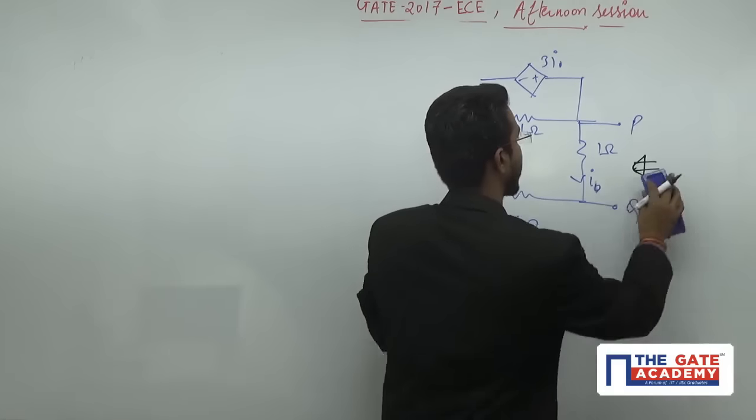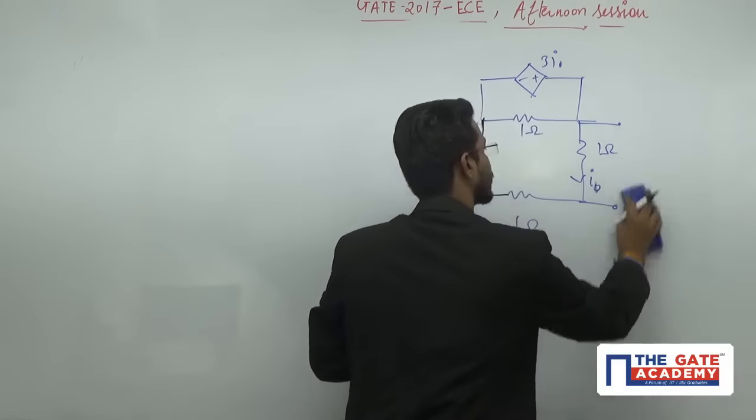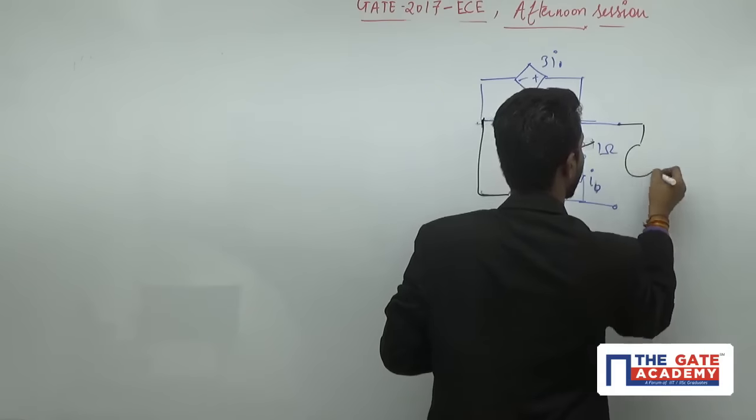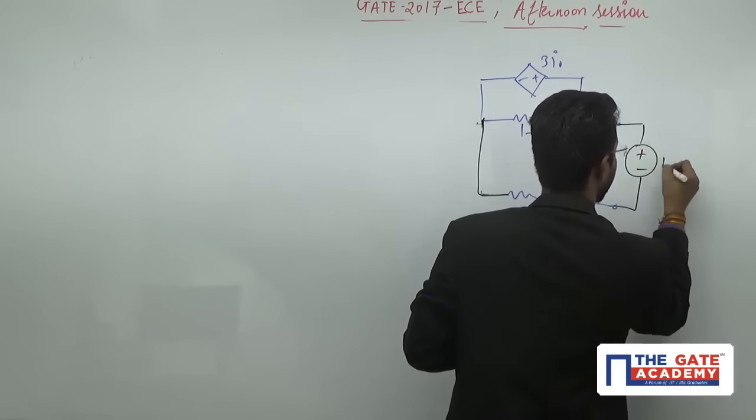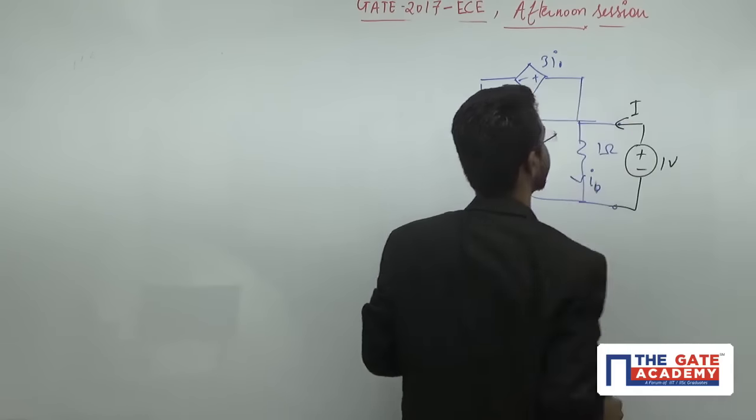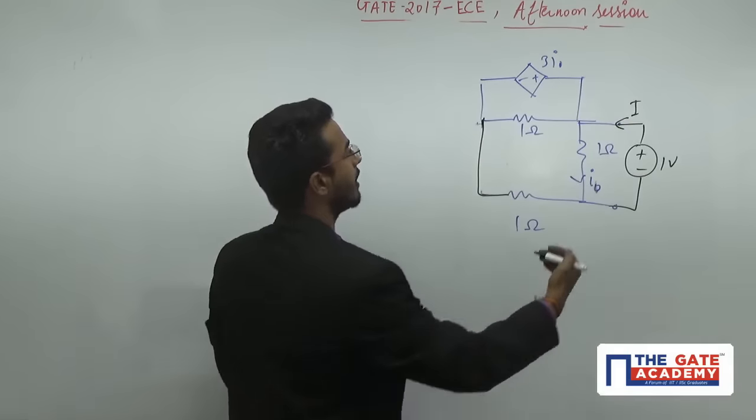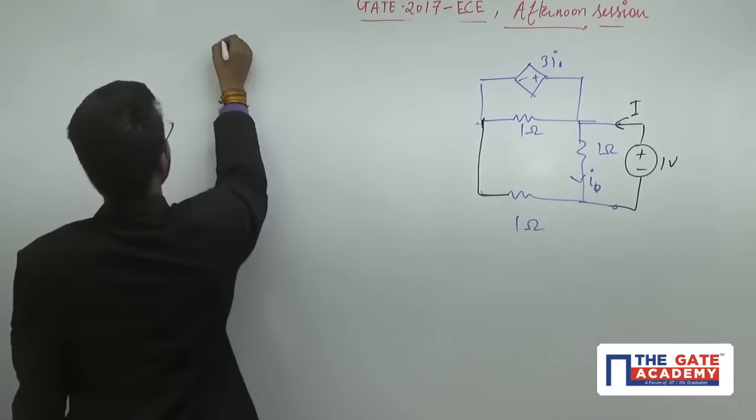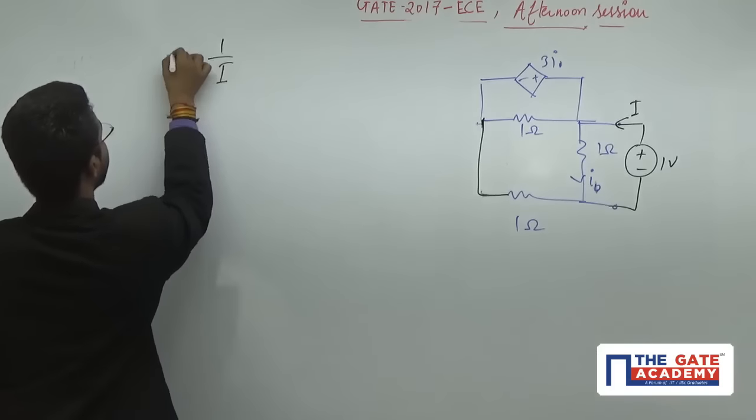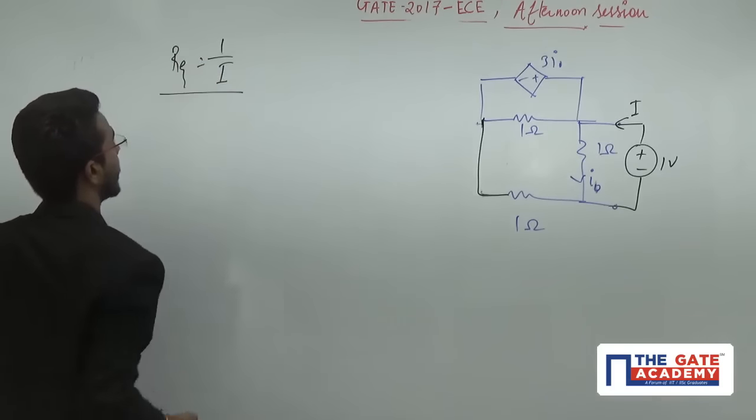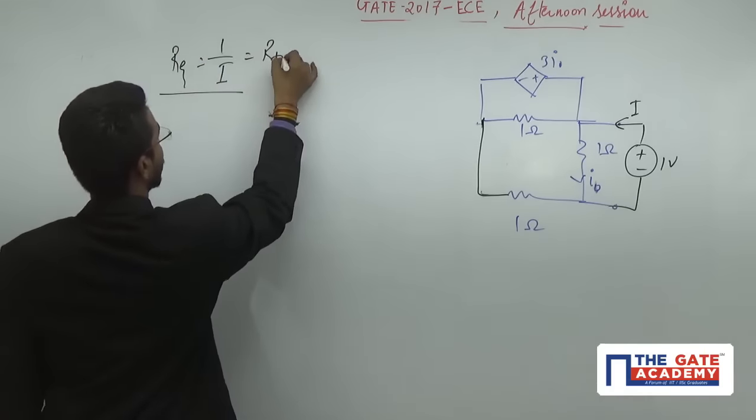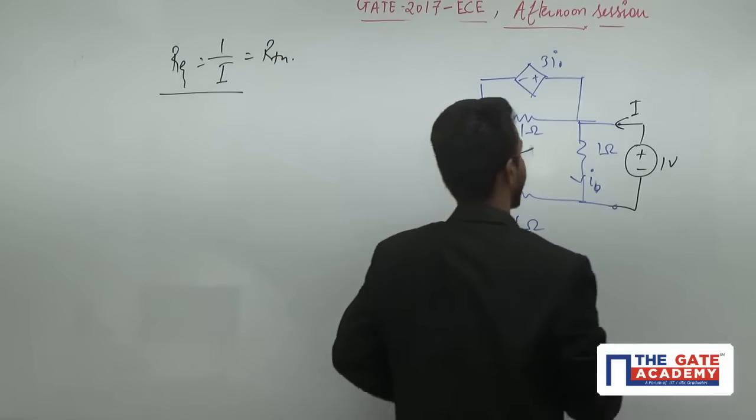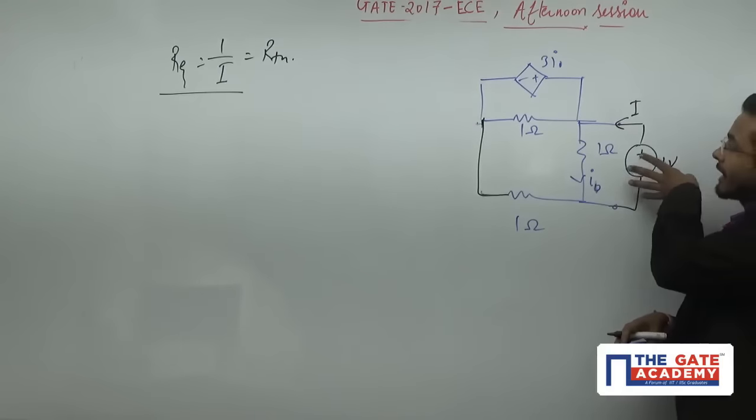Now here I am applying one test source of value one volt and I am assuming the current is I. If I am able to calculate this I, then one divided by I will be my R equivalent, which is also my RTH.